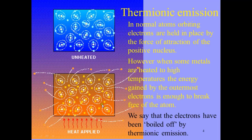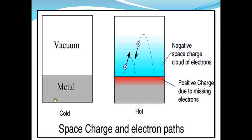We say that the electrons have been boiled off by thermionic emission. You can see how the electrons move out from the outermost shell, which is enough to break free of the atom. In the cold condition diagram, this is the metal and this is the vacuum — one electrode is the anode and the other is the filament. In the cold condition, the electrons do not have any kind of movement.